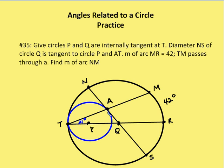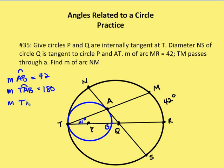The intercepted arc is twice the inscribed angle, so arc AB equals arc MR, which is 42 degrees. Since TPB is a diameter, arc TAB equals 180 degrees, so the measure of arc TA equals 138 degrees. Now I can find the measure of angle AQT: it equals one-half the difference of arc TA minus arc AB, which is one-half of (138 - 42), giving one-half of 96, equal to 48 degrees.